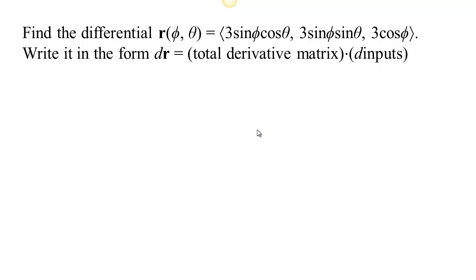Here's another parametric surface because we have two inputs, phi and theta, and three outputs: an x, a y, and a z. So there's x, y, and z. We can think about this as a parametric surface.